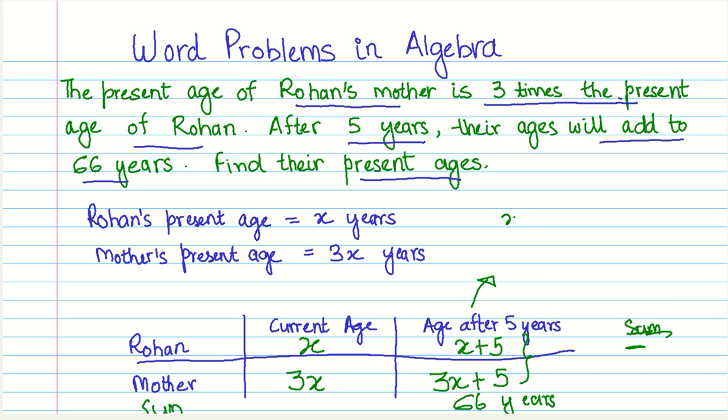So we are given x plus 5, that is, Rohan's age after five years, plus 3x plus 5, his mother's age after five years. And this equals to 66. Now, let us simplify this further. So x can be added to 3x, so we get 4x. And similarly, we can add 5 plus 5, we get 10. So 4x plus 10 equals 66. Now, this is our algebraic equation that we formed over here.